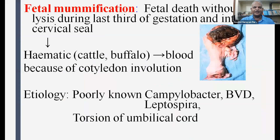Fetal mummification is fetal death without CL lysis during the last third of gestation with an intact cervical seal. The hematic type of mummification is observed in dairy cattle and buffalo; due to cotyledon involution, blood accumulates and becomes chocolate brown in color. The etiology is poorly known, but campylobacter, bovine virus diarrhea, leptospira, and torsion of the umbilical cord are presumptive etiological factors.